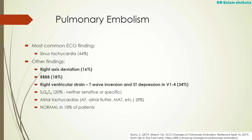Right axis deviation might point you towards pulmonary embolism, as can a right bundle branch block and a right ventricular strain pattern — so T-wave inversion and ST depression in V1 to 4. The S1, Q3, T3 sign gets talked about a lot, but I should point out it's not sensitive or specific for pulmonary embolism.